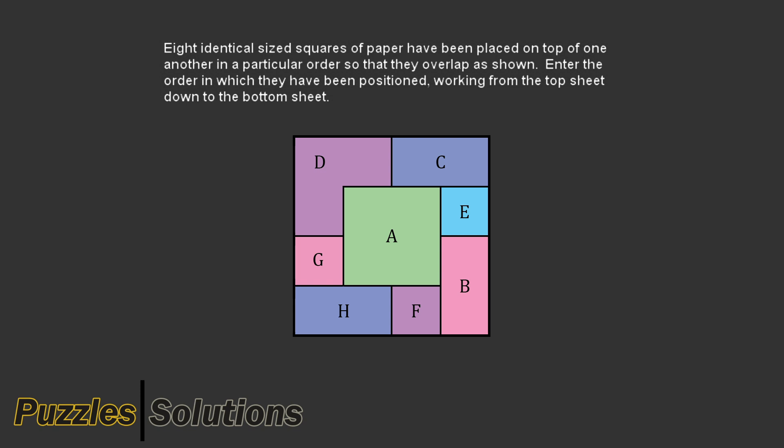The top piece of paper has to be A, because all of A is visible.